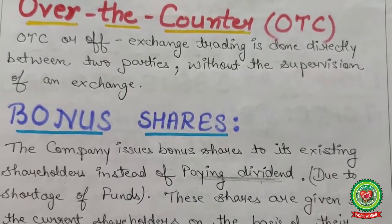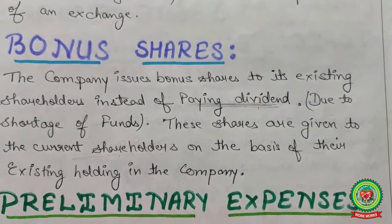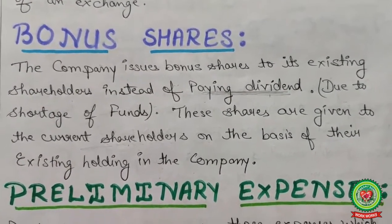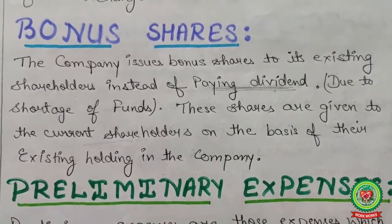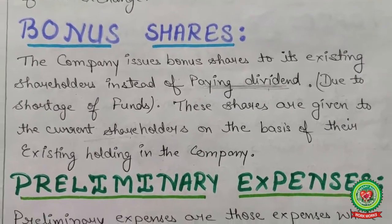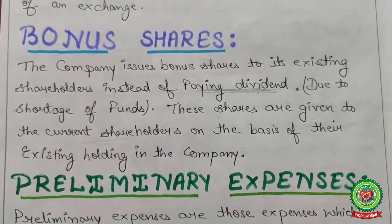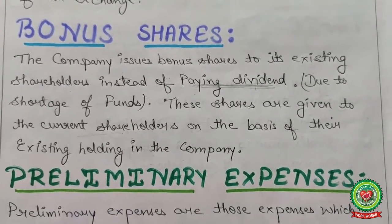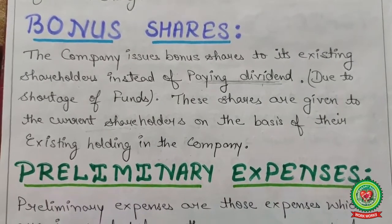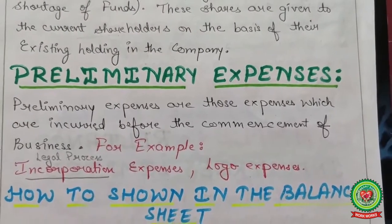Next: bonus shares. The company issues bonus shares to its existing shareholders instead of paying a dividend. Sometimes the company does not provide a dividend to shareholders but provides bonus shares due to a shortage of funds. These shares are given to current shareholders on the basis of their existing holding in the company — first check the existing shareholding, then provide bonus shares in that particular proportion.